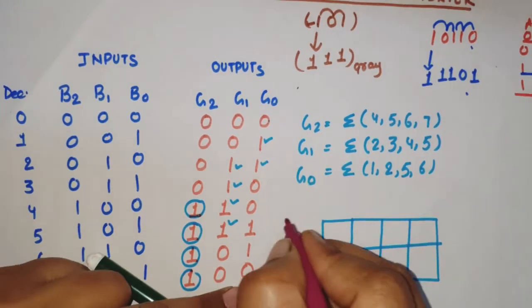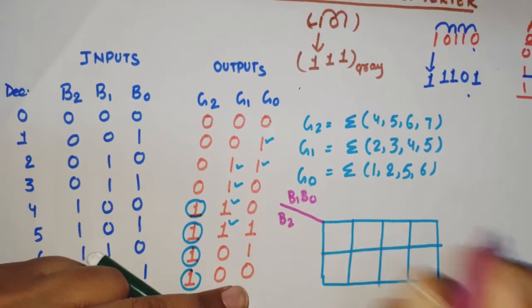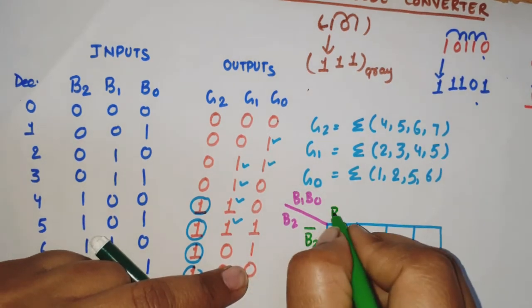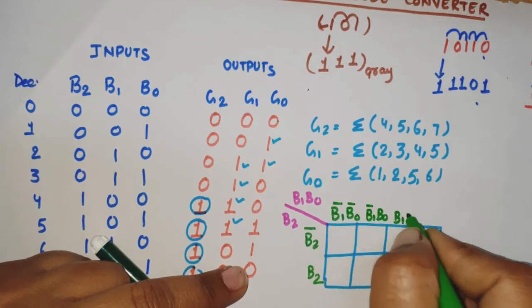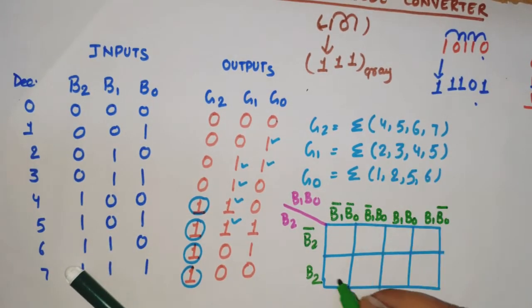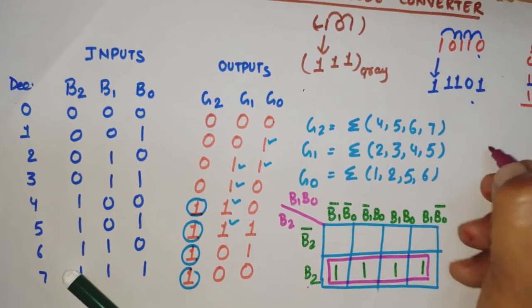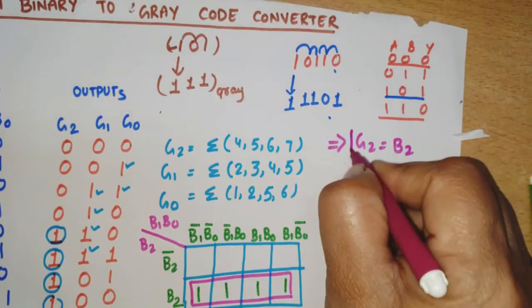For the K-map of G2, I've set up B2, B1, B0 axes. Placing minterms 4, 5, 6, and 7 — one quad is possible. This quad covers all entries where B2=1, meaning the column value is 1. Therefore, G2 is equal to B2.